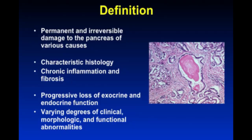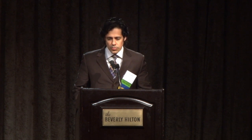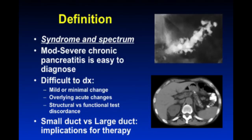Chronic pancreatitis is a permanent and irreversible damage to the pancreas of various causes. It's characterized histologically by chronic inflammatory infiltrate and fibrosis, and clinically by progressive loss of both exocrine and endocrine function, and a spectrum of morphological and functional abnormalities that cause sometimes debilitating consequences. Severe pancreatitis with calcifications or a markedly abnormal duct is relatively easy to diagnose, but minimal or mild changes and discordance between structural and functional tests make diagnosis harder.